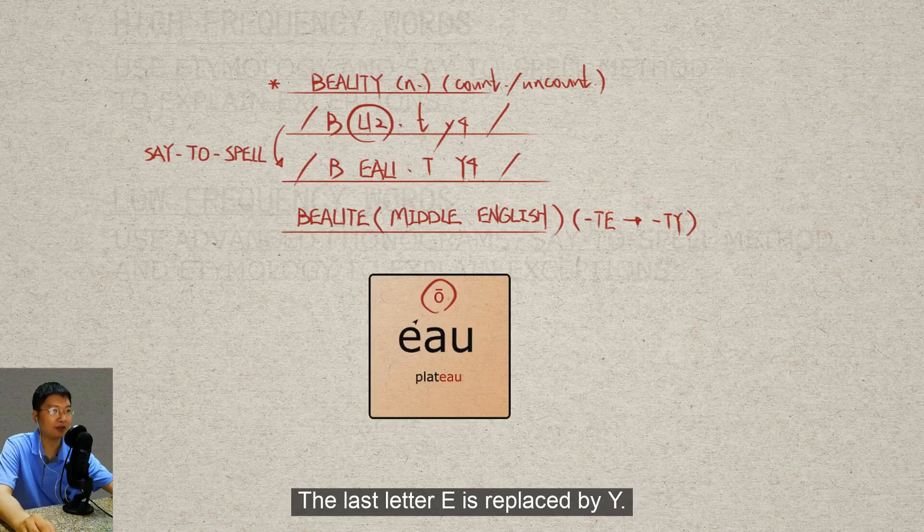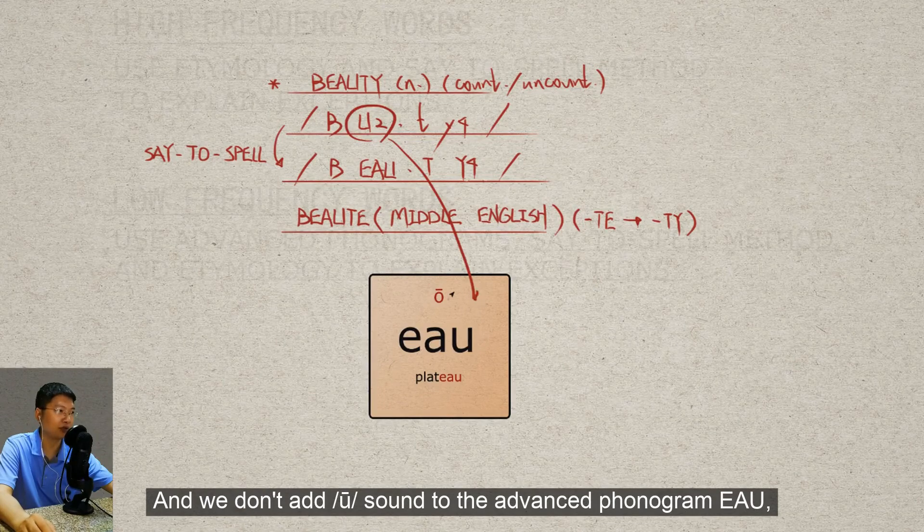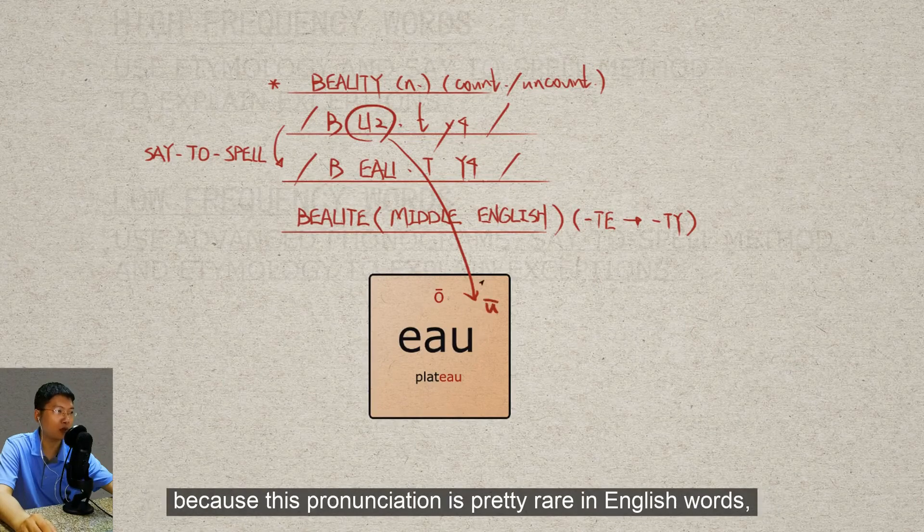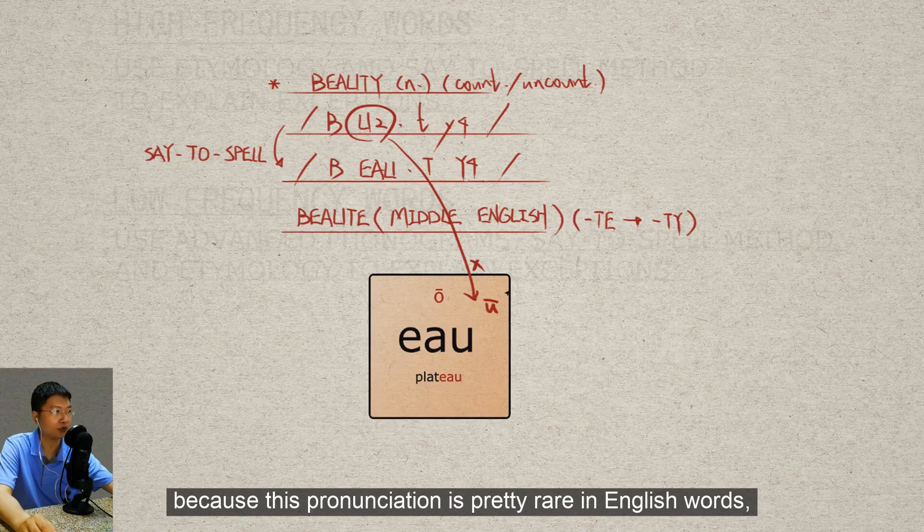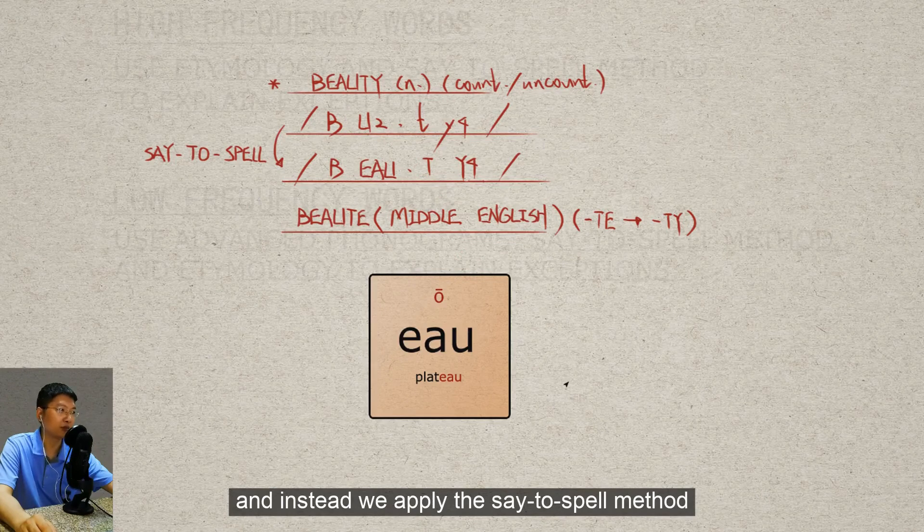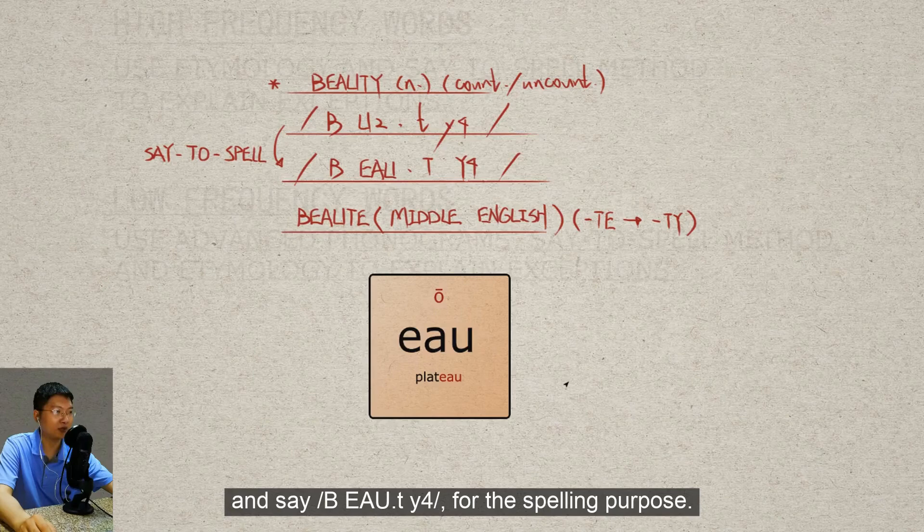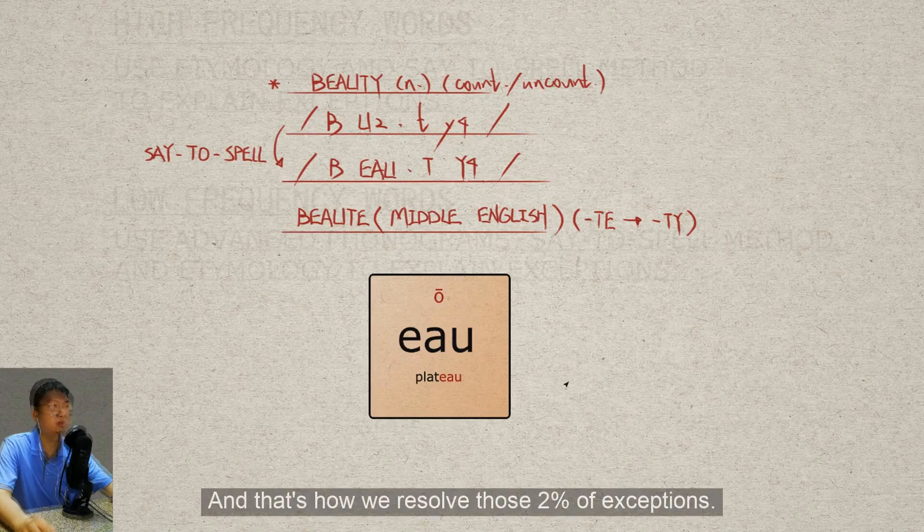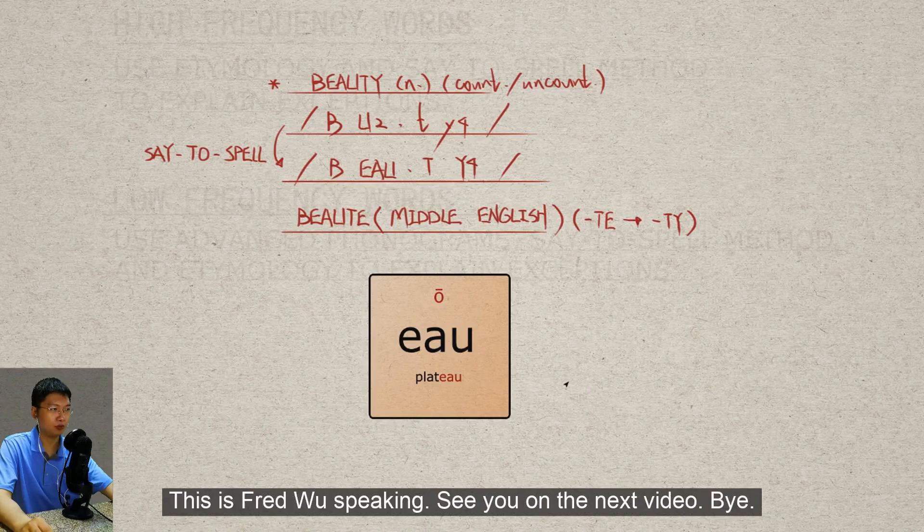The last letter E is replaced by Y. And we don't add the 'U' sound to the advanced phonogram E-A-U because this pronunciation is pretty rare in English words. Instead, we apply the say-to-spell method and say 'beauty' for spelling purposes.